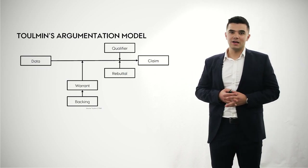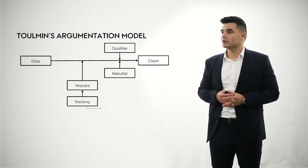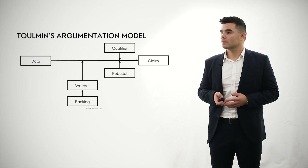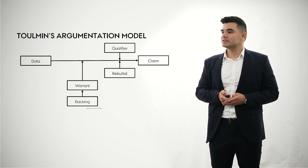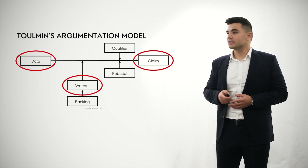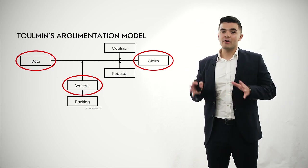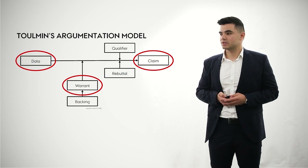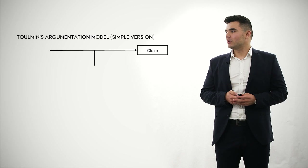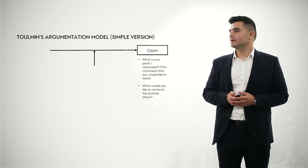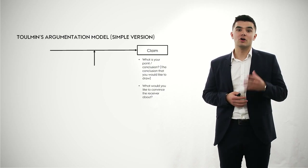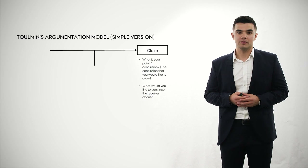What you see on this slide is the entire argumentation model that Toulmin presented. You can see all six elements and how they are interrelated. I will primarily focus on the claim, the data, and the warrant. Let's look at the simplified version of Toulmin's argumentation model. The claim is simply the point — the conclusion you want to draw and convince the reader, or receiver, about.